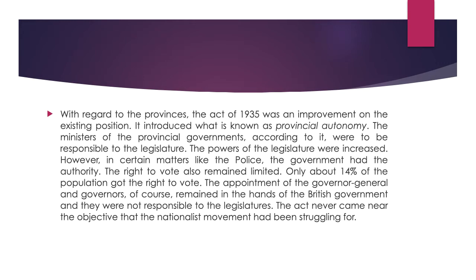With regard to the provinces, the Act of 1935 was an improvement on the existing position. It introduced what is known as provincial autonomy. The ministers of the provincial government were to be responsible to the legislature, and the powers of the legislature were increased. However, in certain matters like the police, the government retained authority. The right to vote also remained limited — only about 14% of the population got the right to vote. The appointment of the Governor General and the governors remained in the hands of the British government, and they were not responsible to the legislators. So the act never came near the objective that the nationalist movement had been struggling for.